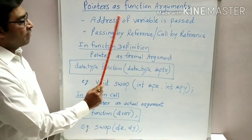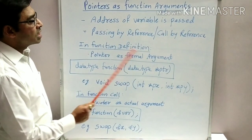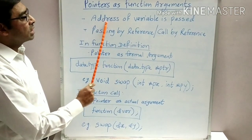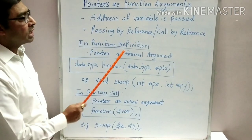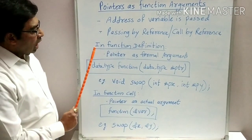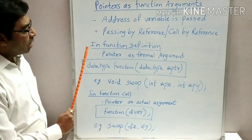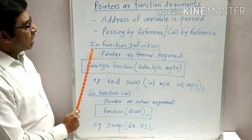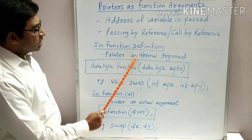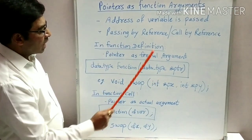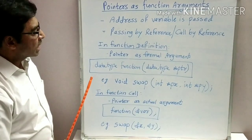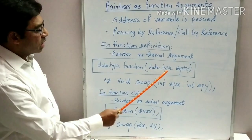This passing by reference or call by reference is also called as passing by address or call by address, as we are passing the address of the variable as argument to the function. Now, let us see how to specify the pointer as formal arguments in function definition. In function definition, the pointer is specified as formal arguments like this. This is the general format or syntax of passing a pointer to a function.